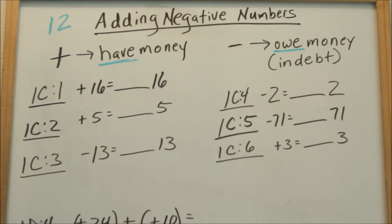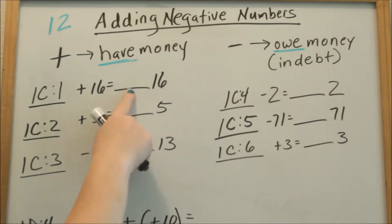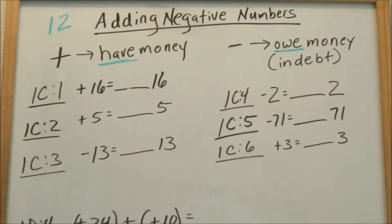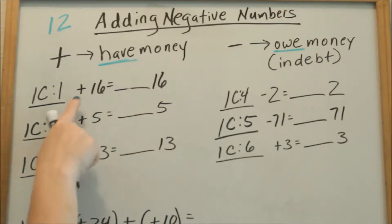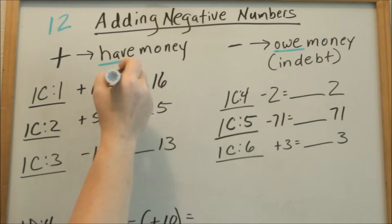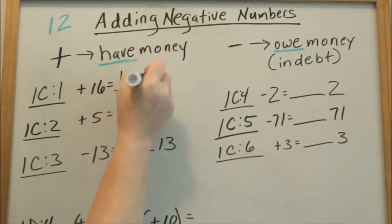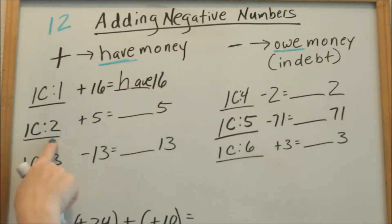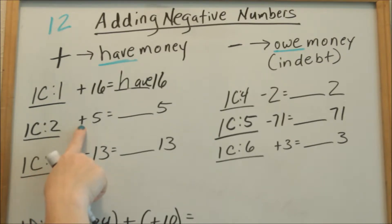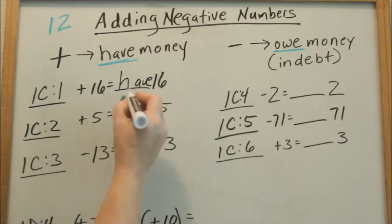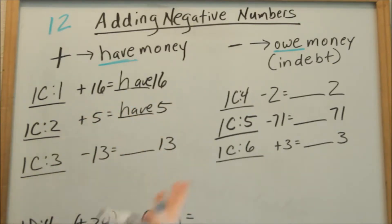Looking at page C number 1, they want you to put 'have' or 'owe' in the blank. If you have a positive 16, positive means you have money, so 'have' goes there. Number 2 on page C, you have a positive 5. Positive symbol means you have 5 — whether you have 5 pieces of candy or $5, whatever you want to think of.